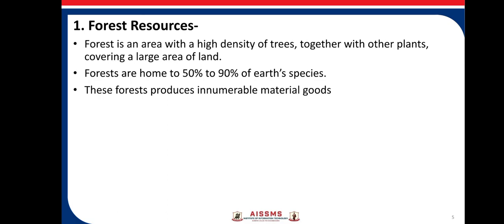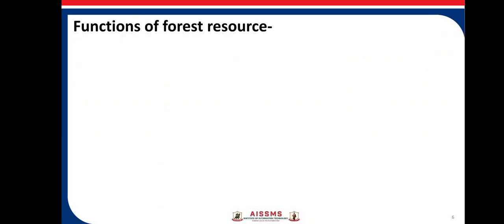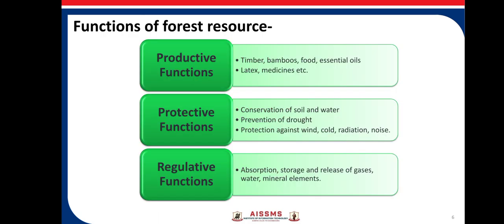Forests are home to 50–90% of earth's species. Also, forests produce innumerable material goods which have commercial values. There are three types of functions of forest resources: productive functions, protective functions, and regulative functions. Productive functions include materials with commercial value like timber, bamboo, food, essential oil, latex, medicine, etc.